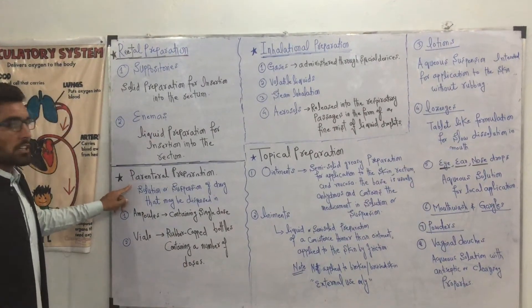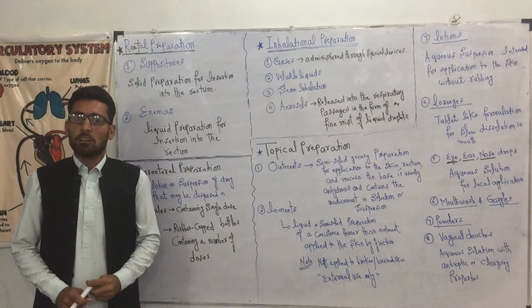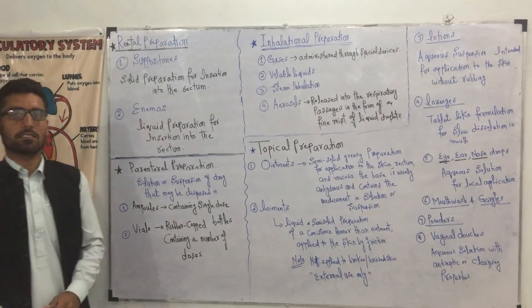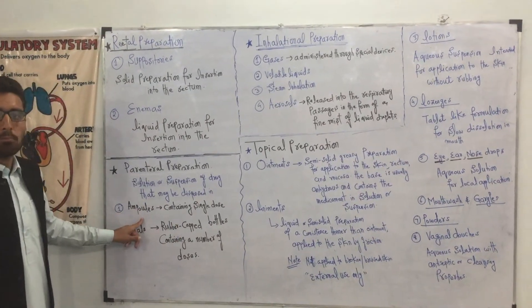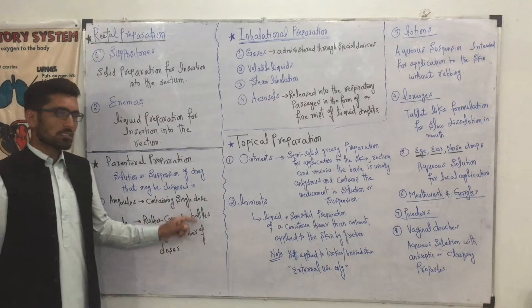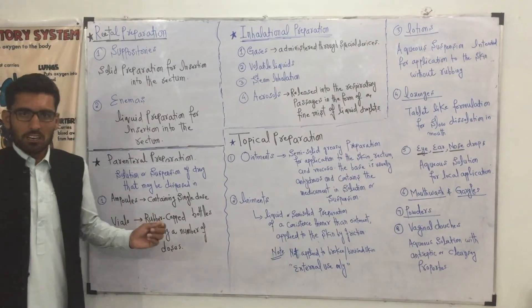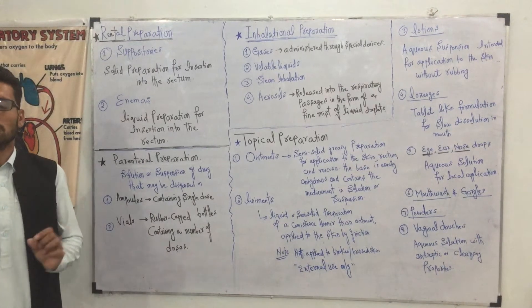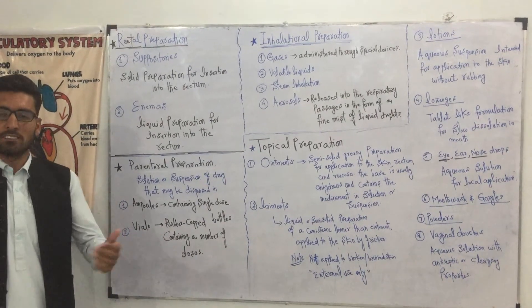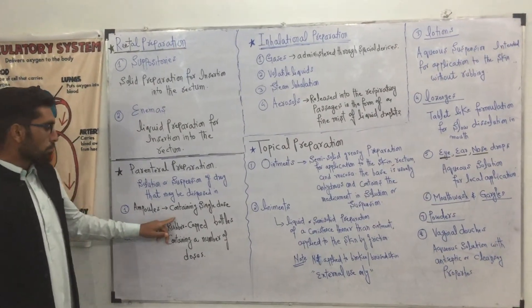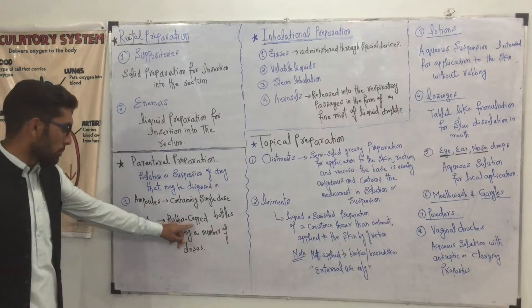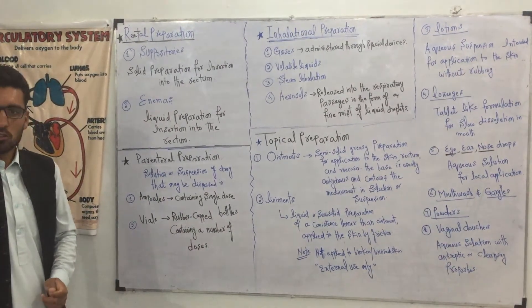Next is parenteral dosage forms or parenteral preparations — solutions or suspensions of a drug that may be dispensed in ampoules or vials. Ampoules contain a single dose; the containers are made from pharmaceutical glass. Vials are rubber-capped bottles containing a number of doses.